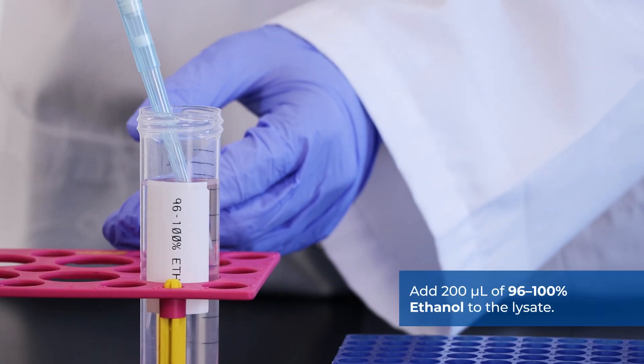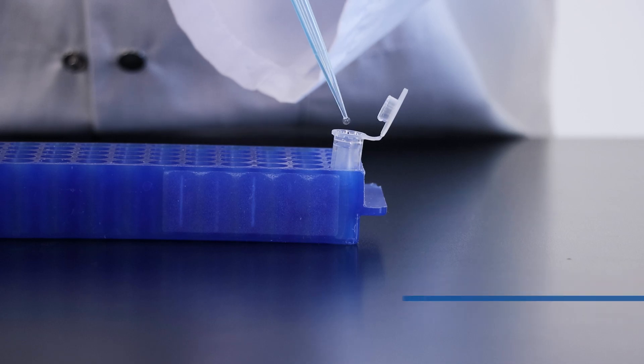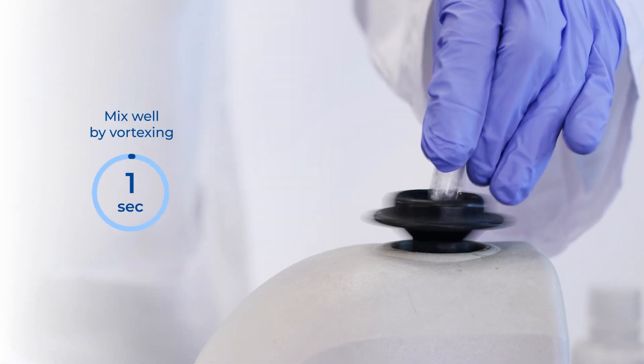Add 200 microliters of 96 to 100% ethanol to the lysate. Mix by vortexing for 10 seconds.